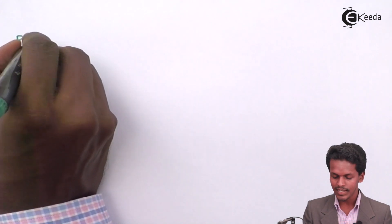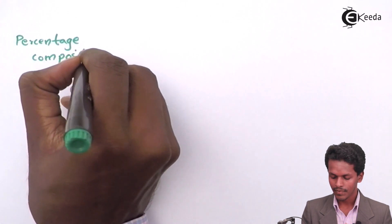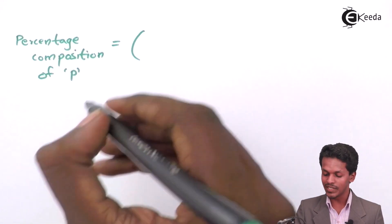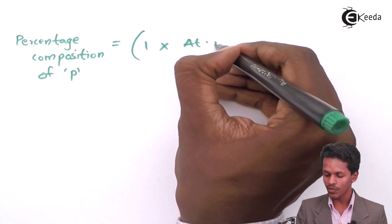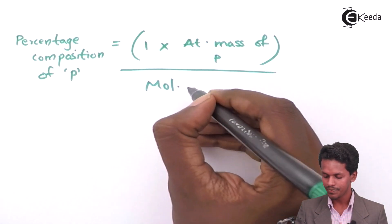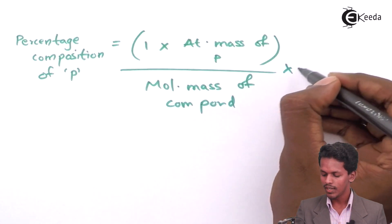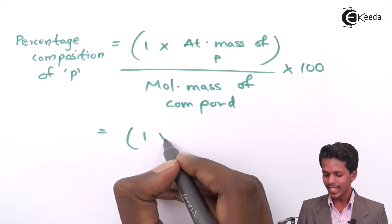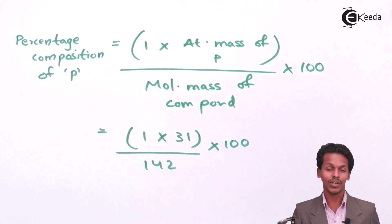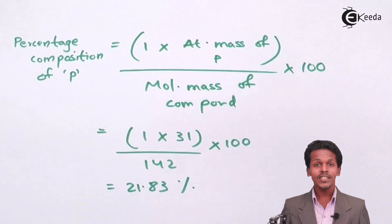The percentage composition of phosphorus: phosphorus is present one time in the compound, so 1 × atomic mass of phosphorus ÷ molecular mass × 100. The atomic mass of phosphorus is 31, divided by 142, multiplied by 100. The answer is 21.83%.